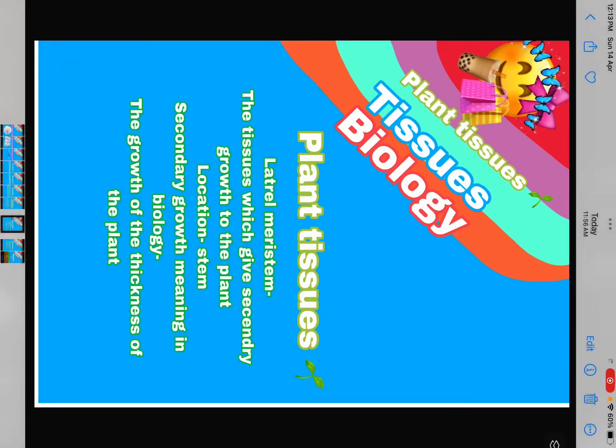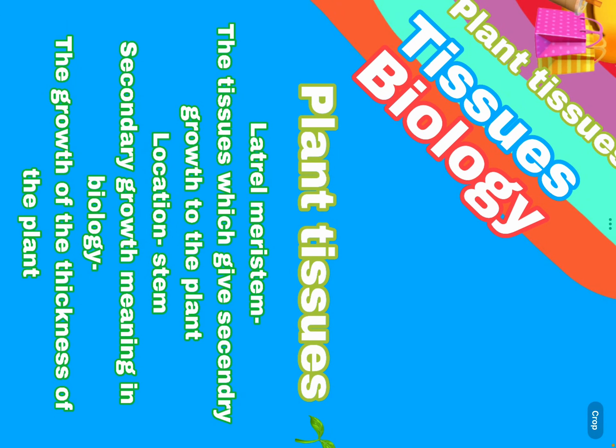Now let's learn about lateral tissue. Lateral tissues are the tissues which give secondary growth to the plant, and they are present in the stem. Lateral meristem are the tissues which increase the thickness of the plant. If you don't know what thickness is, please search on Google.